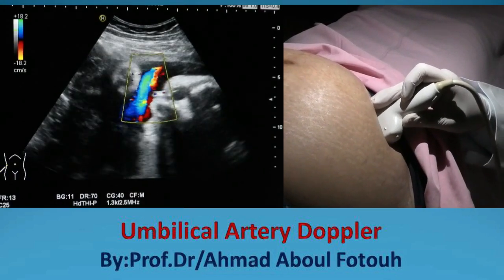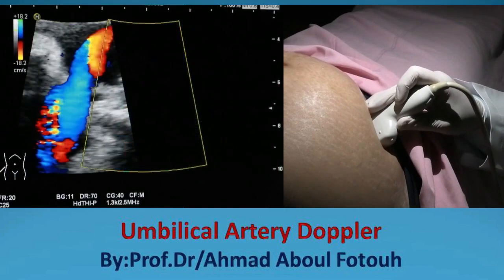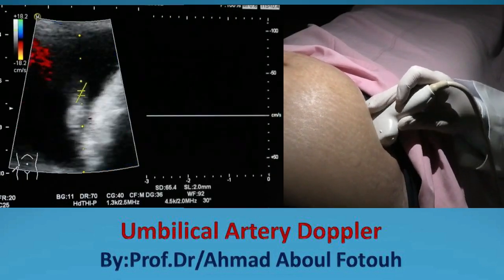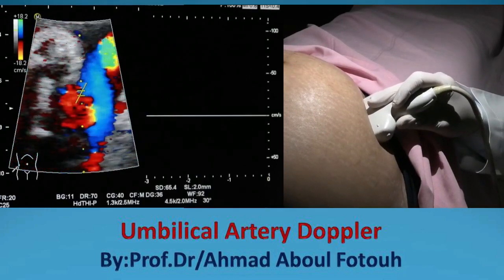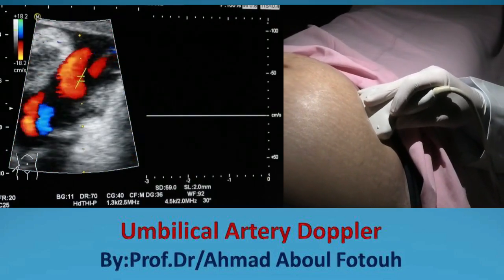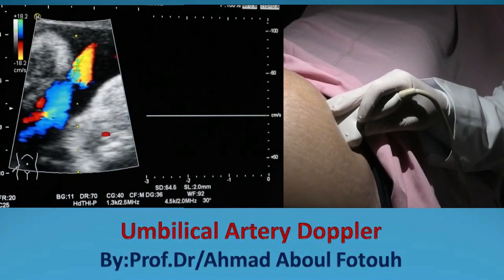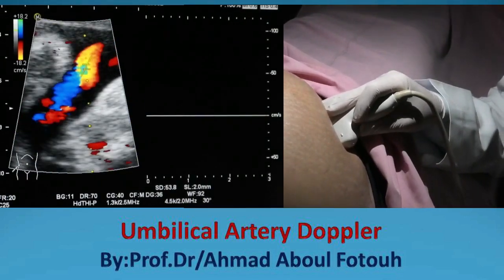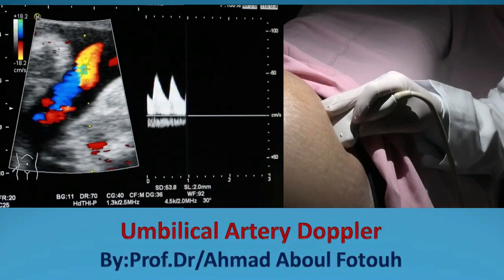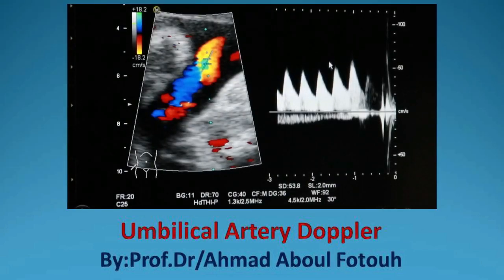Again here is the umbilical cord. Pick a good portion of the cord — I'm magnifying for teaching purposes. Here is a good angle through which I can obtain a good umbilical arterial blood flow. Don't consider this abnormal — this is the major waveform, which is good.